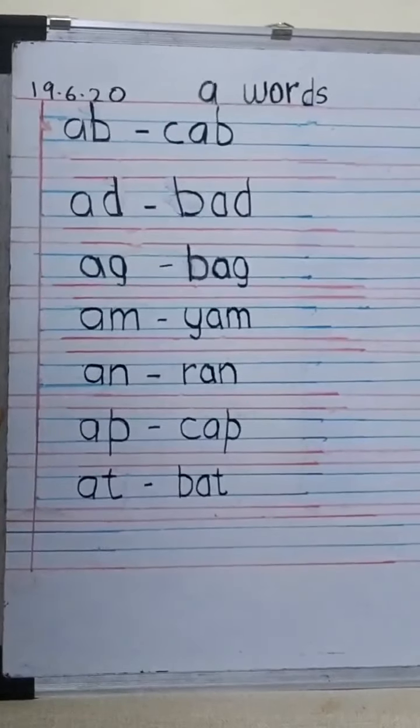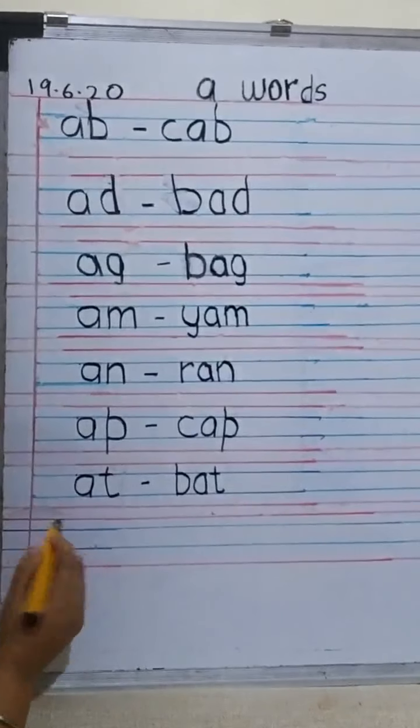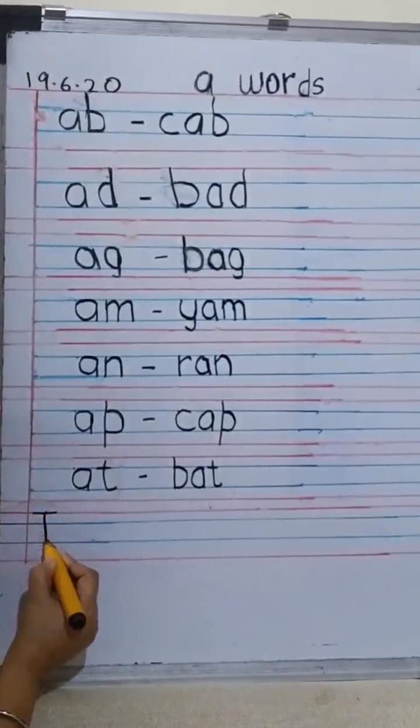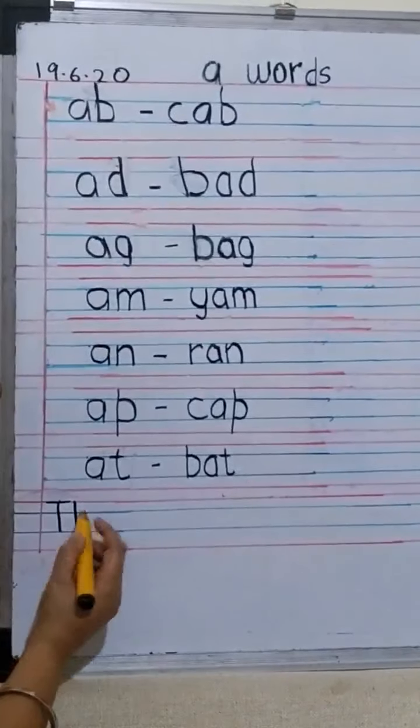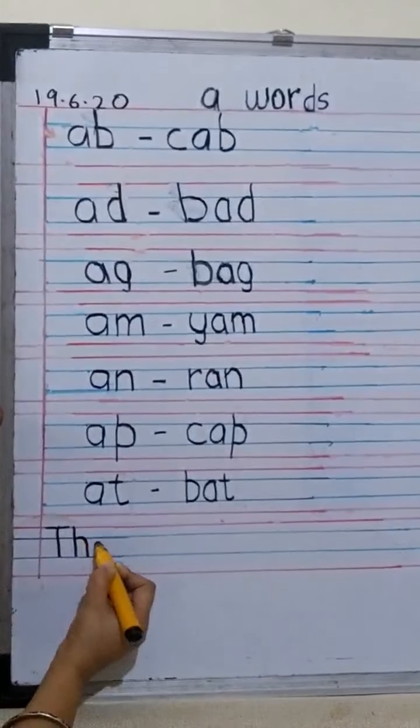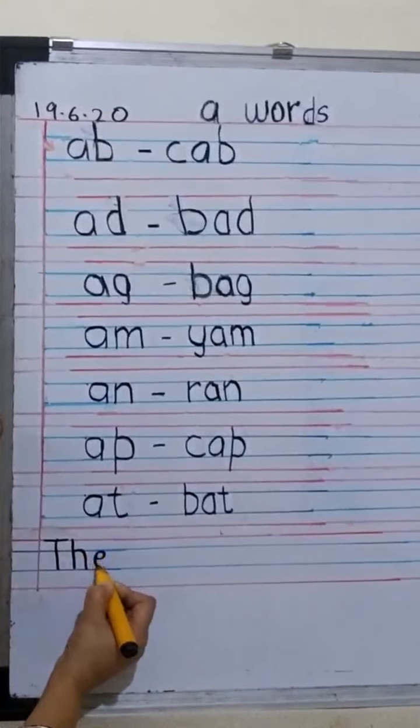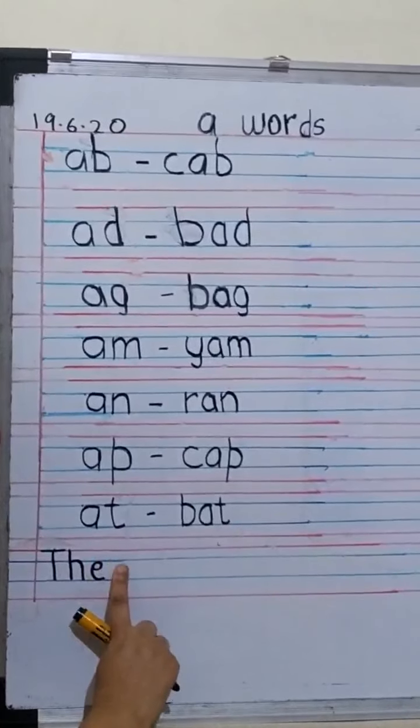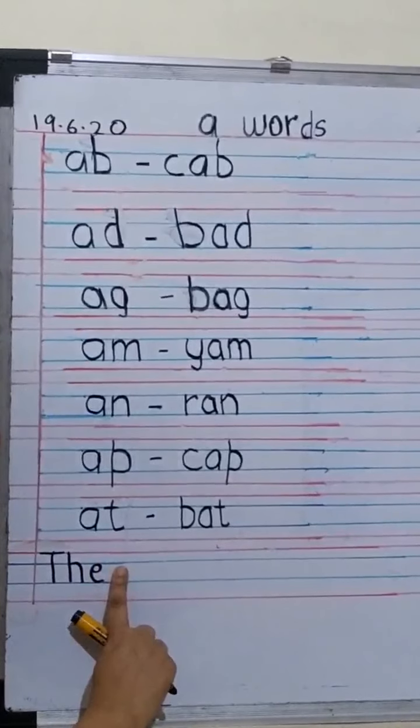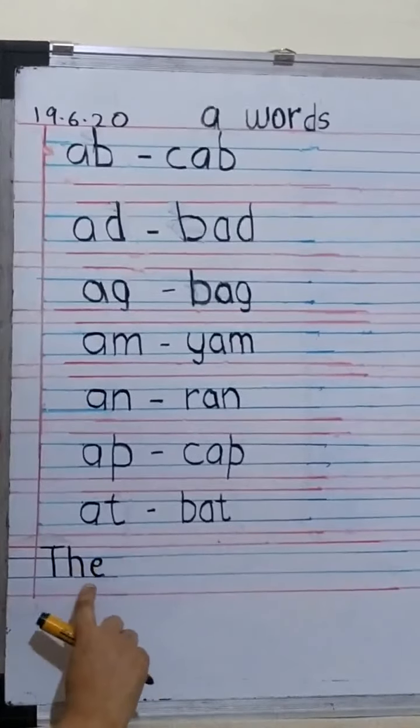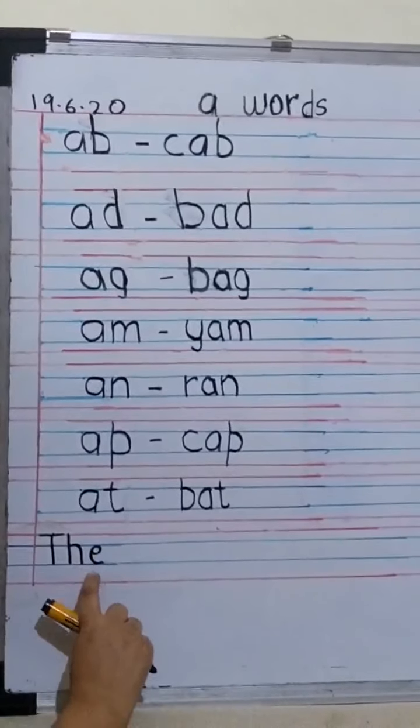So let's begin. We will write, next to the margin we will write a capital letter. That is T. Can you see? T. So next to the T we write an H, and then we write an E. Now in between two words we will give one finger space. Remember this is very important. We have to give one finger space. So we have written THE. The letters are close to each other.